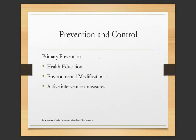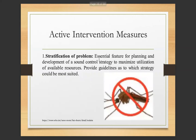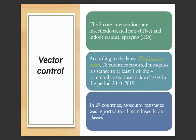Primary prevention includes health education, environmental modifications, and active intervention measures. Active intervention measures begin with certification of the problem — essential for planning and developing a sound control strategy to maximize utilization of available resources. Vector control: the two core interventions are insecticide-treated nets and indoor residual spraying. According to the latest World Malaria Report, 78 countries reported mosquito resistance to at least one of the four commonly used insecticide classes in the period 2010–2019. In 29 countries, mosquito resistance was reported to all main insecticide classes.